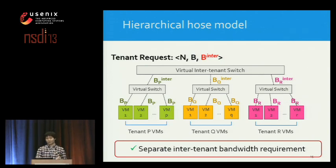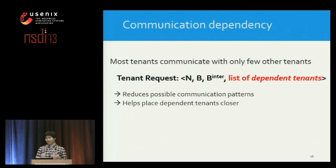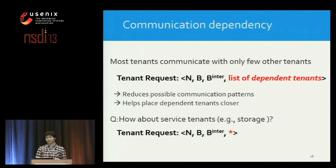However, the hierarchical host model still assumes all-to-all communication, which makes it almost impossible to guarantee bandwidth at large scale. As a solution, we propose communication dependency. We observe that most tenants communicate with only a small number of other tenants, so we let tenants specify dependencies in their request. This information reduces possible communication patterns and also helps the placement algorithm put dependent VMs closer, reducing overall network load. For service tenants who communicate with any other tenants, we allow wildcard dependency.